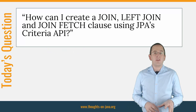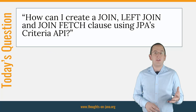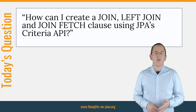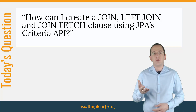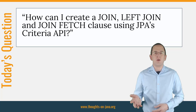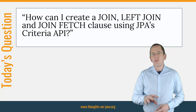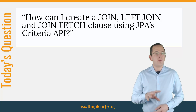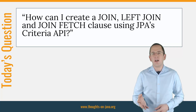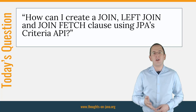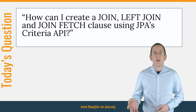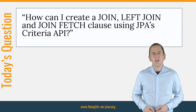In one of my previous Hibernate Tip videos, I explained the difference between a join, a left join, and a join fetch clause. I used JPQL in all examples and Igor asked how he could do the same using JPA's Criteria API. Because the Criteria API presents a few pitfalls, I decided to answer it in a new Hibernate Tip. So the question I want to answer today is: how can I create a join, left join, and join fetch clause using JPA's Criteria API?